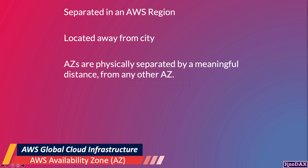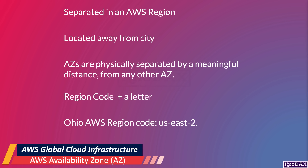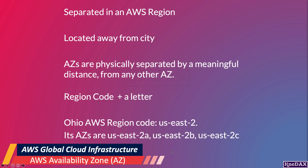Availability Zones have codes as well, like regions. An Availability Zone code has a region code plus a letter added at the end. For example, the Ohio region has region code US East 2. This AWS region has three Availability Zones with codes US East 2A, US East 2B, and US East 2C. A letter has been added to the end of the region code to get the AZ code.